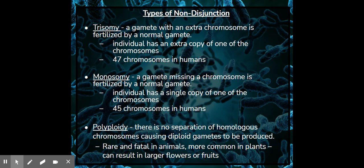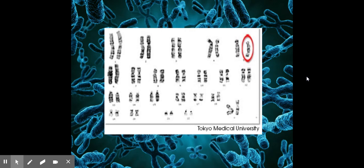Polyploidy: there's no separation of homologous chromosomes causing diploid gametes to be produced. It's rare and fatal in animals and more common in plants. It can result in larger flowers or fruits. So in plants, polyploidy may actually be a good thing, but in animals it is not.